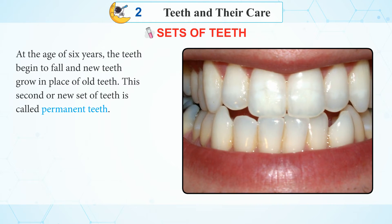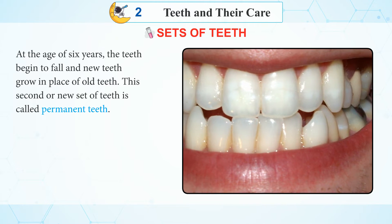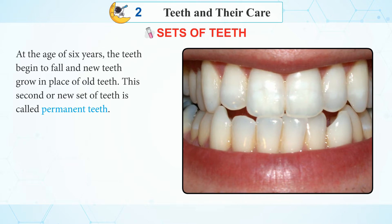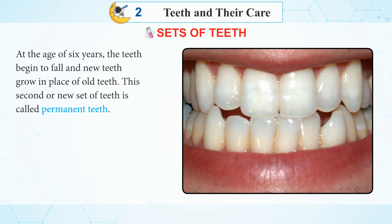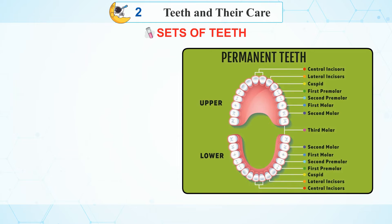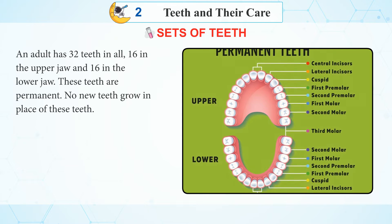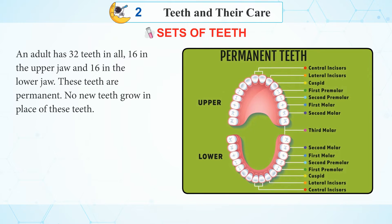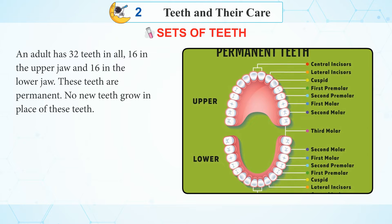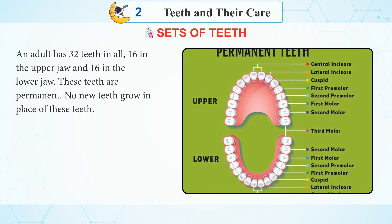At the age of 6 years, the teeth begin to fall and new teeth grow in place of the old teeth. This second or new set of teeth is called permanent teeth. An adult has 32 teeth in all — 16 in the upper jaw and 16 in the lower jaw. These teeth are permanent, and no new teeth grow in place of these teeth.